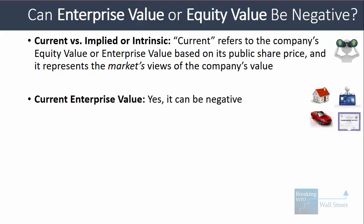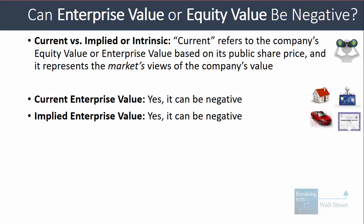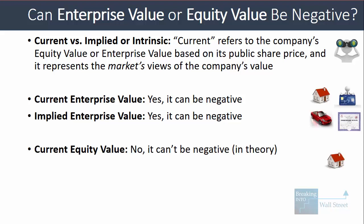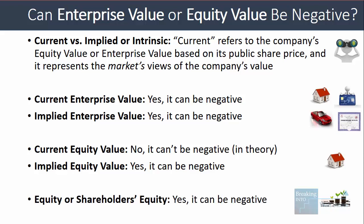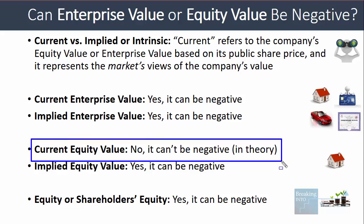Current enterprise value can be negative. Implied or intrinsic enterprise value can also be negative. Current equity value cannot be negative in theory. Implied equity value can be negative. And shareholders equity on a company's balance sheet can definitely be negative. So four out of five of these terms could potentially be negative — the only exception is current equity value, at least for public companies.